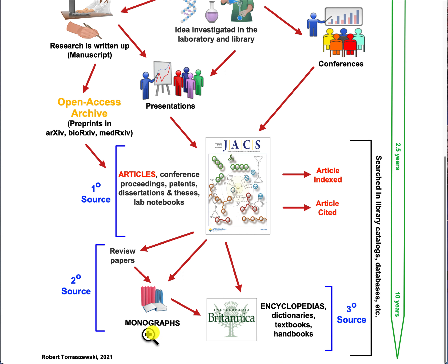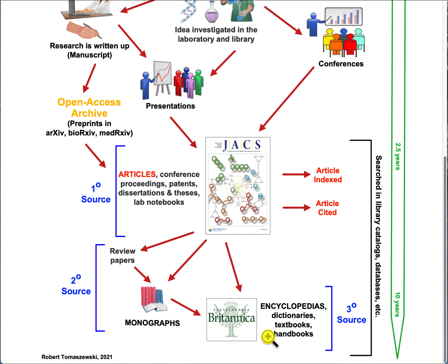Eventually the information in review papers and monographs — known as secondary sources — gets mentioned in encyclopedias, dictionaries, textbooks, and handbooks, usually as just one short paragraph. These document types are sometimes referred to as tertiary sources in the scientific literature.